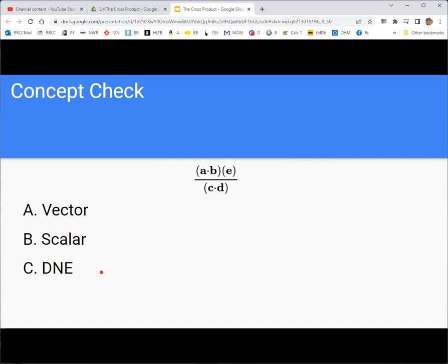Last one. All right. So a, b, c, d, and e are all vectors, and a dot b is a scalar, c dot d is a scalar, and you would divide those. But this is multiplying a scalar times a vector e. So a scalar times a vector is a vector.